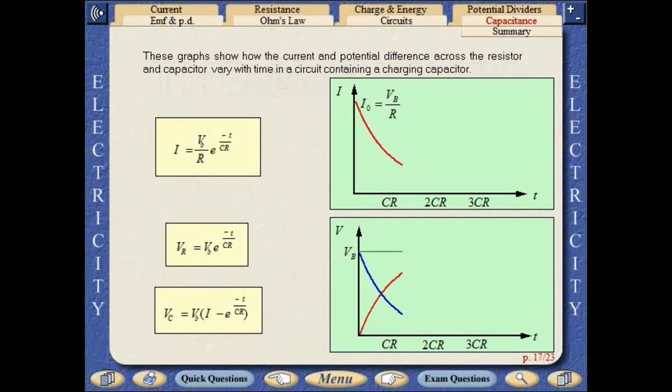These graphs show how the current and the potential differences across the resistor and capacitor vary with time in a circuit containing a charging capacitor.